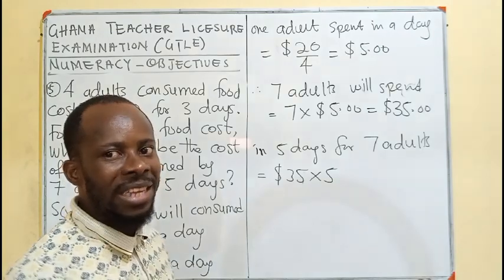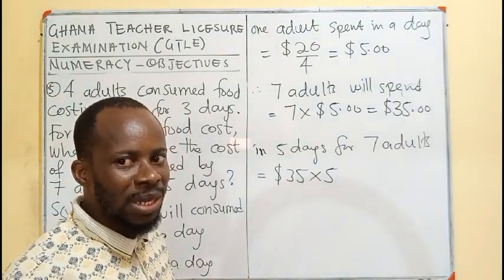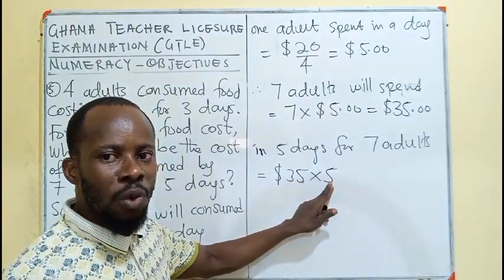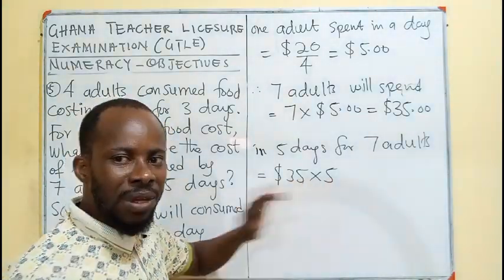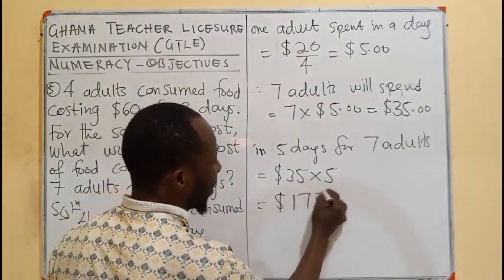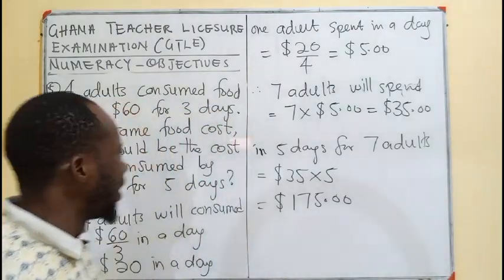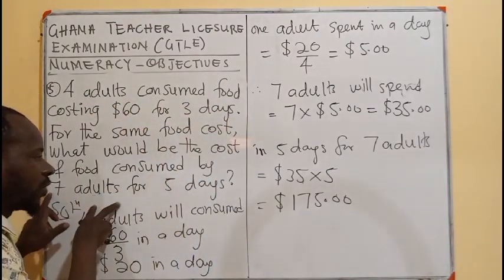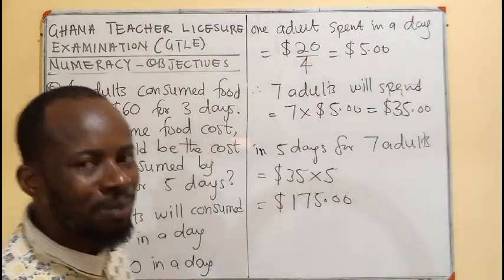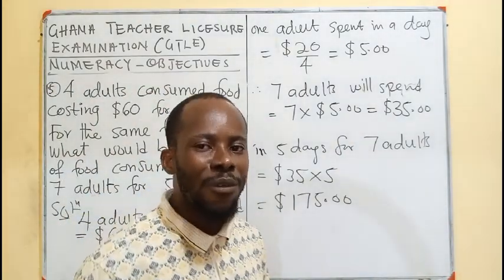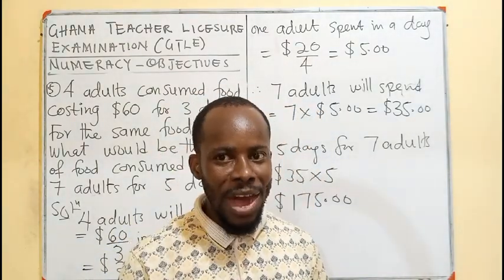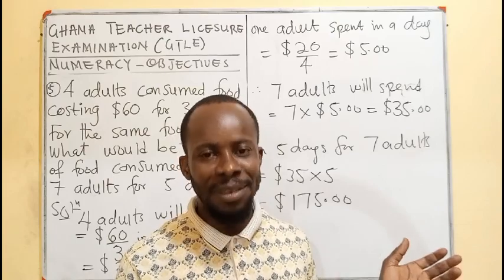Since multiplication is commutative, 30 times 5 is $150, and 5 times 5 is $25. So $150 plus $25 gives us $175. It means 7 adults eating for 5 days, using the same cost of food, will be spending $175 in those 5 days.